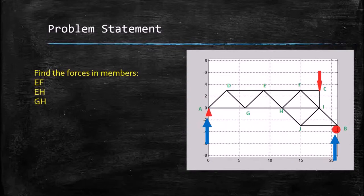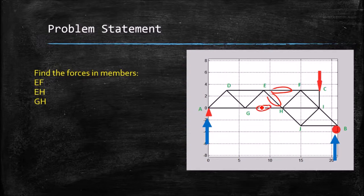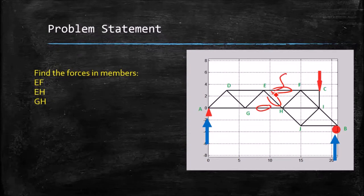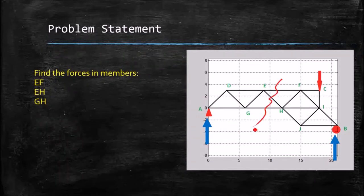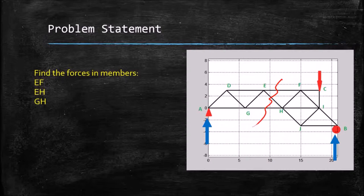So our problem statement is to find the forces in the members EF, EH, and GH. And obviously we can draw a section through there and find the forces across that cut line, and that gives us everything we need.